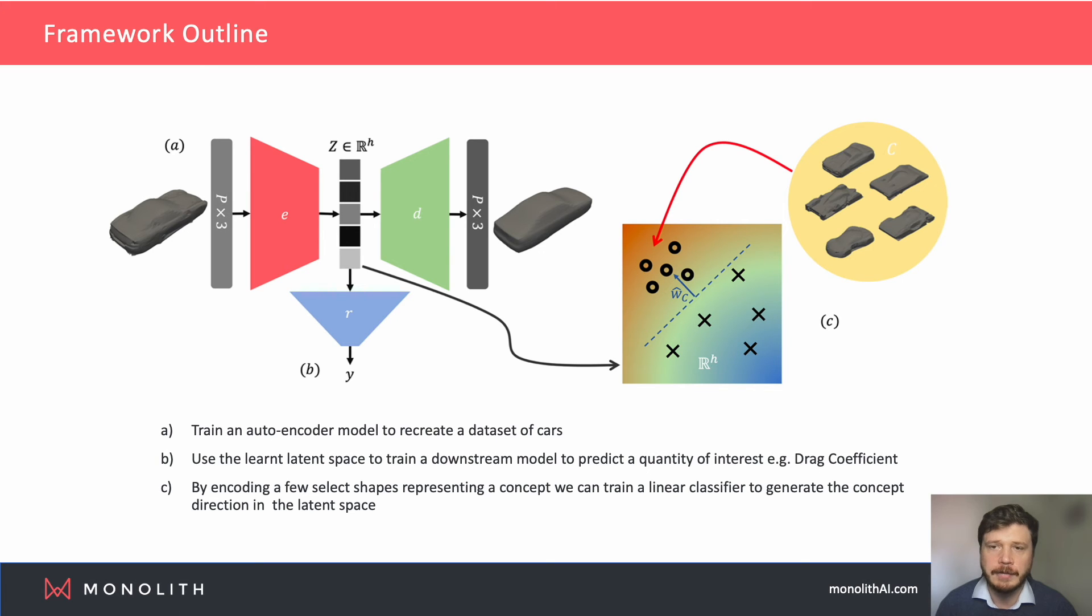In this slide, we outline the framework used in the paper. All the presented results revolve around an autoencoder trained to reproduce 3D point clouds derived from various car shapes, with the aim of obtaining a latent space that is capable of parametrically encoding each design. We also train a downstream model on the latent space to predict the drag coefficient for each car. By doing this, we can leverage the TCAP framework to test how the different concepts impact the drag coefficient across the entire dataset.